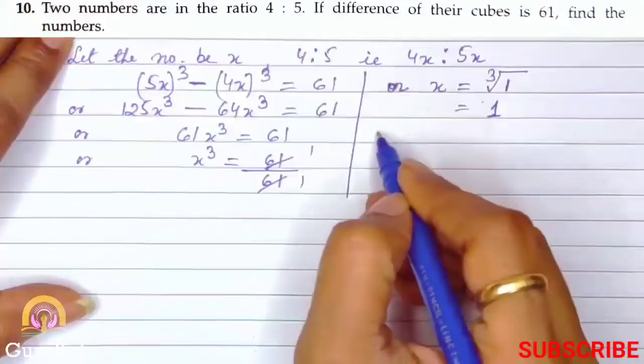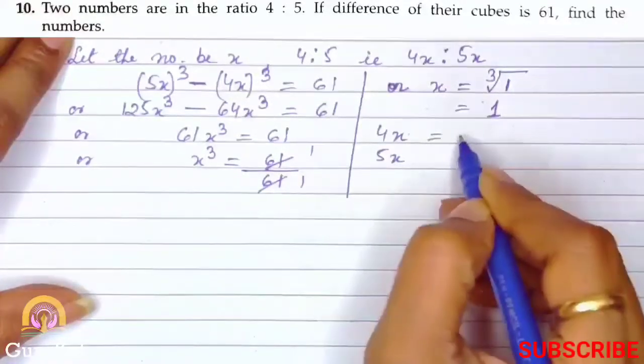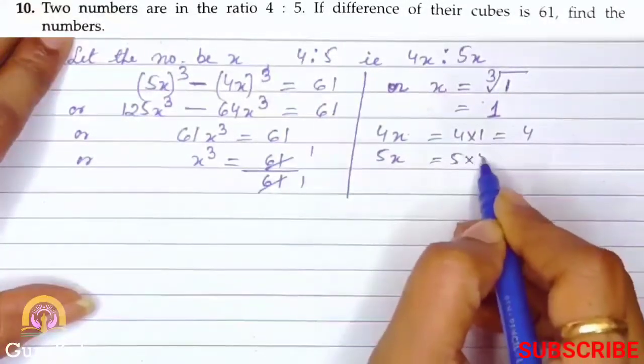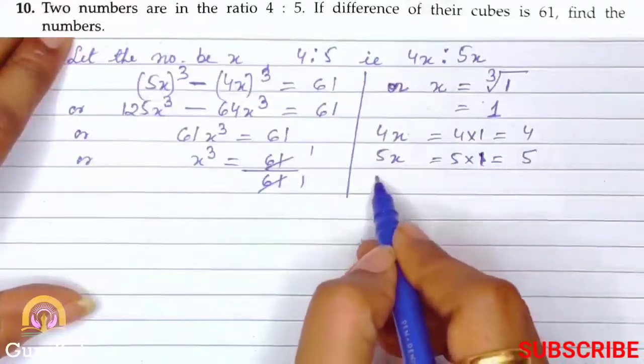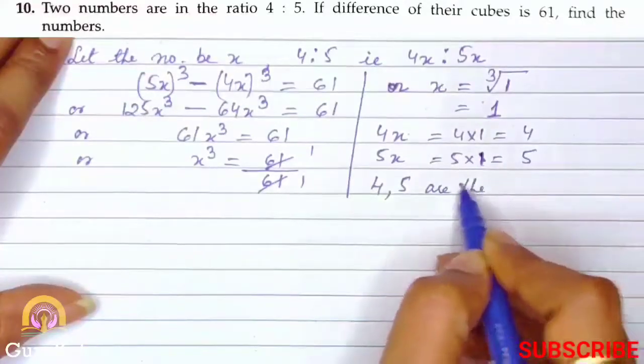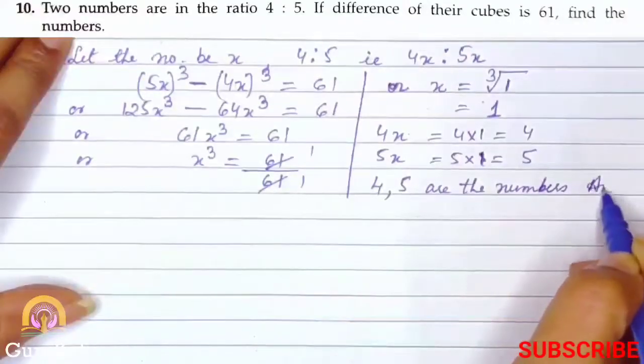Now let's find the numbers. First is 4x, then 5x. 4 × 1 gives us 4, 5 × 1 gives us 5. So 4 and 5 are the numbers. This is the answer.